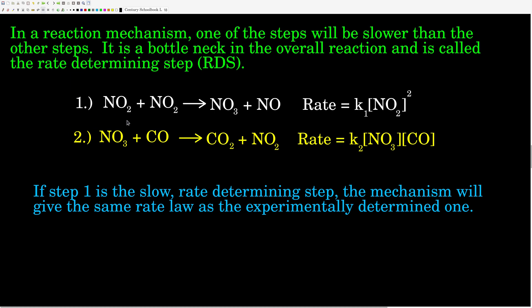Going back to our original equation, we proposed this mechanism. If step one — with the rate equal to K1 times the concentration of NO2 squared — is the rate-determining step, the slow step, then the rate of our proposed mechanism is the same as the experimentally determined rate law. If the second step were the slow step, that would not match the experimentally observed rate and so it wouldn't work.